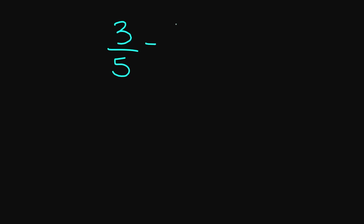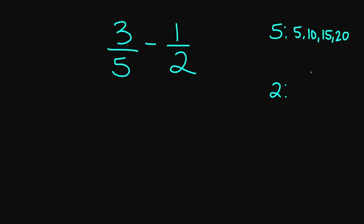Let's try 3 over 5 minus 1 over 2. My denominators are not the same, so I need to find a common denominator. We're going to find the multiples of 5 and 2. For 5: 5, 10, 15, 20. For 2: 2, 4, 6, 8, 10, 12. My lowest common multiple between 5 and 2 is going to be 10.